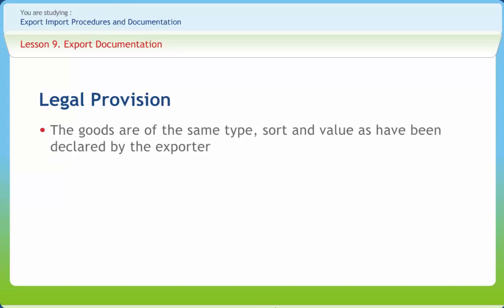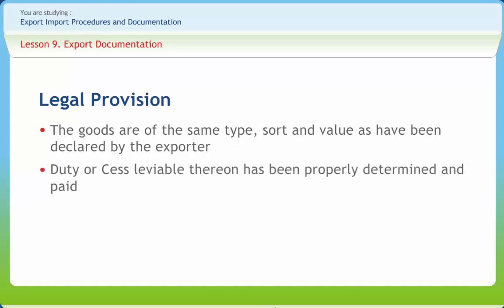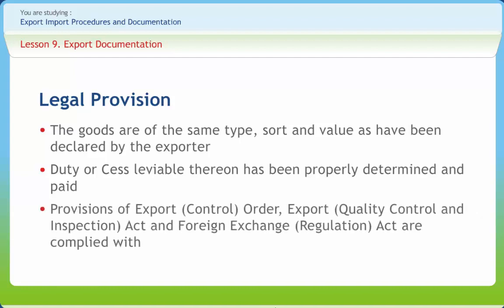Before granting the permission, the customs officer ensures that the goods being exported are in accordance with the different regulations — particularly that the goods are of the same type, description, and value as declared by the exporter. Duty or cess levy thereon has been properly determined and paid. Provisions of export control order, Export Quality Control and Inspection Act, and Foreign Exchange Regulation Act are complied with.